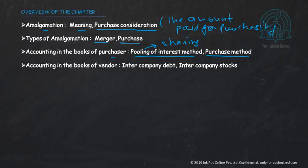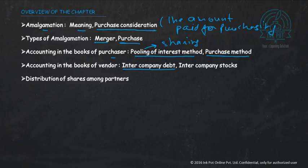In the books of the vendor, we consider intercompany debts — when one company has given a loan to another company and the two companies are going to amalgamate. We also consider intercompany stock — when one company has sold goods to another company and those companies are going to be amalgamated or taken over. After that, we look at how shares are distributed to the shareholders of the vendor company.